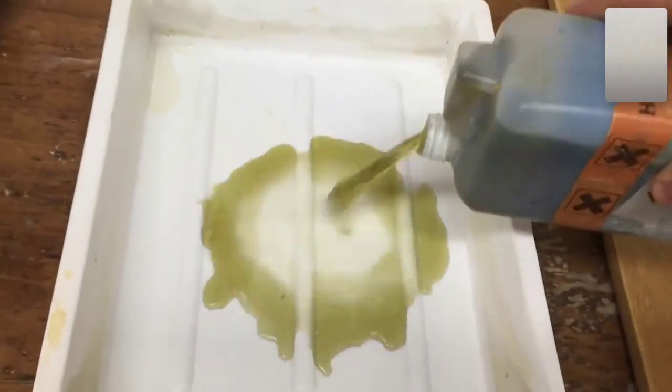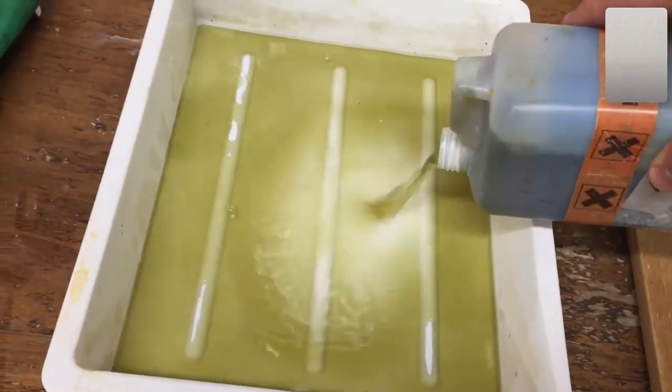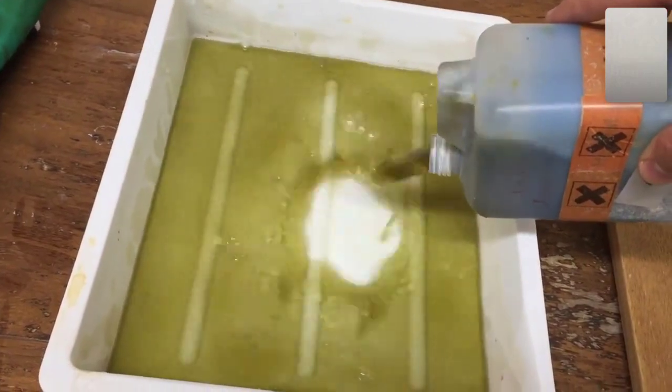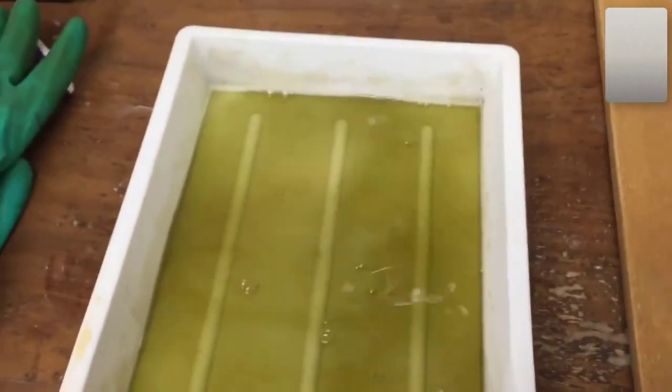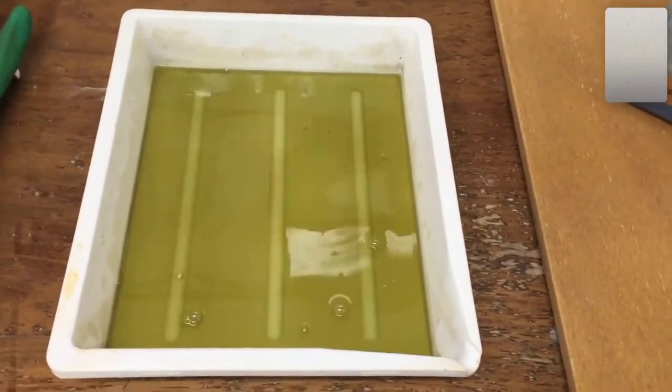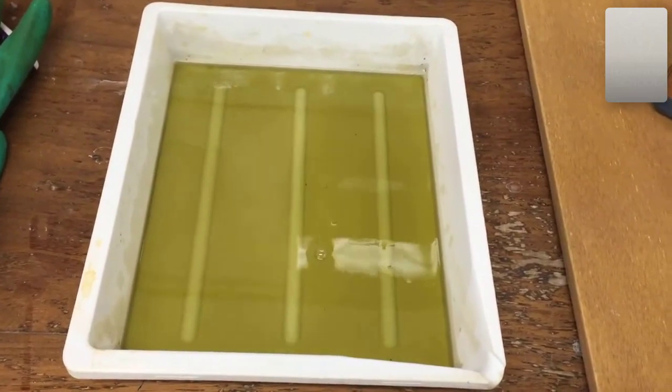We're going to tip out the developer solution into this plastic tray. We're then going to place our PCB into the developer solution, slosh it around and leave it there for about 30 seconds to a minute.